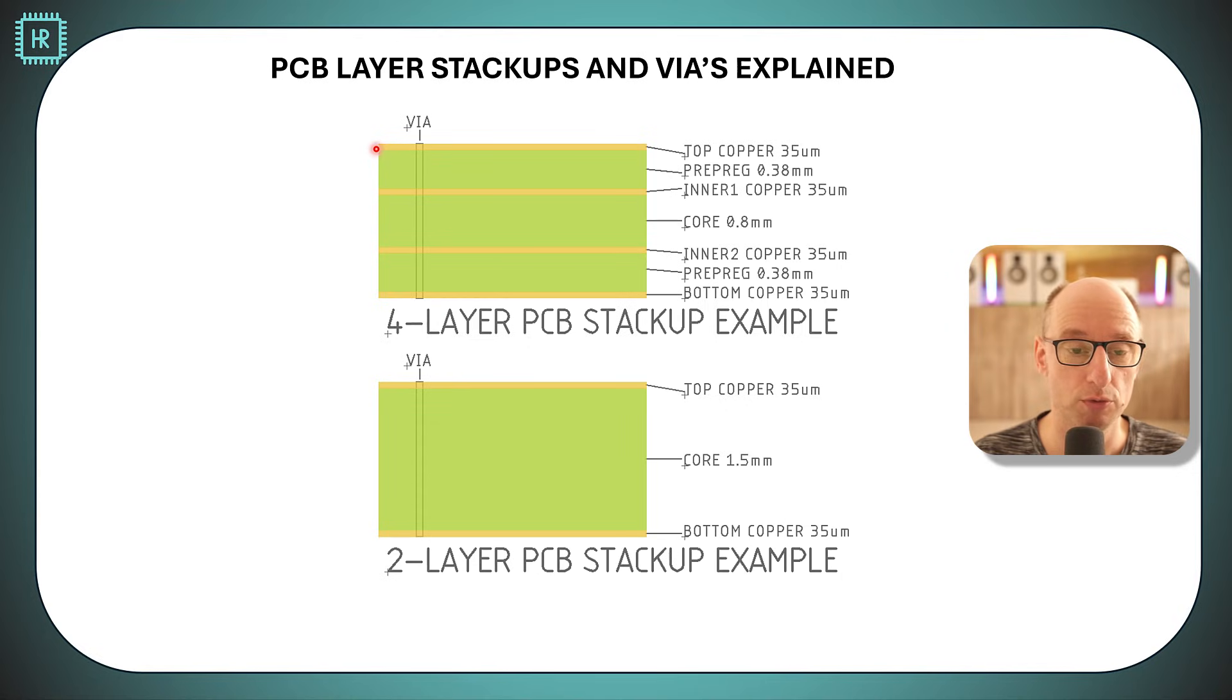On a four layer we see four layers of copper with different insulator thicknesses in between. The first insulator between layer one and two has a thickness of roughly 0.4 millimeters and we see a core between layer two and three of 0.8 millimeters.